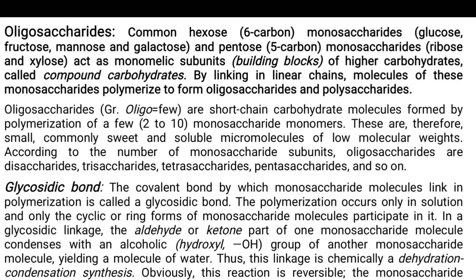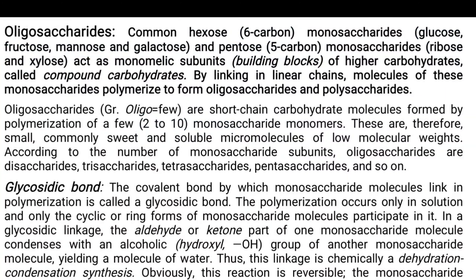The oligosaccharides are long chains — rather, they will be having 2 to 10 molecules of monosaccharides. The oligosaccharides are made up of 2 to 10 molecules of monosaccharide, and basically the monomers in the oligosaccharide are either the hexoses — which means glucose, fructose, mannose and galactose — or they can be pentoses, for example ribose and xylose. We can call these monomeric subunits the building blocks of higher carbohydrates.